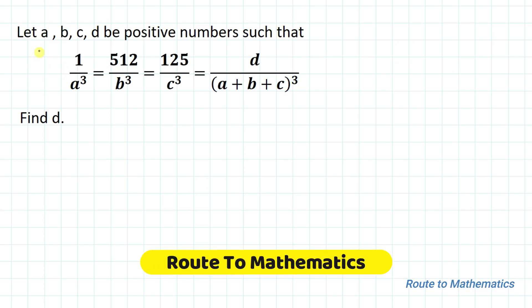Hello everyone, welcome to Root 2 Mathematics. In this video we are going to solve an interesting Olympiad question. The given question is: let a, b, c, d be positive numbers such that 1/a³ = 512/b³ = 125/c³ = d/(a+b+c)³. Find the value of d.